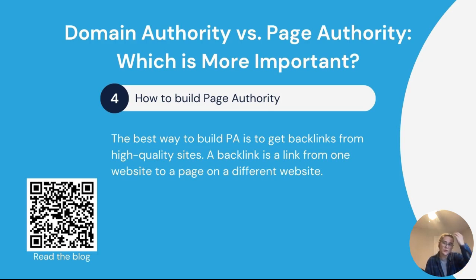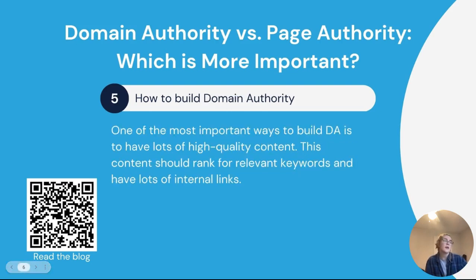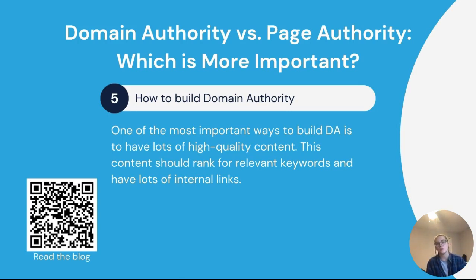So how do you build them? The best way to build page authority is to get backlinks from high-quality authoritative sources — a backlink links directly from one website to another. To build your domain authority, focus on having lots of high-quality content including relevant keywords and internal links, and also building high volumes of authoritative backlinks and profiles to your site.